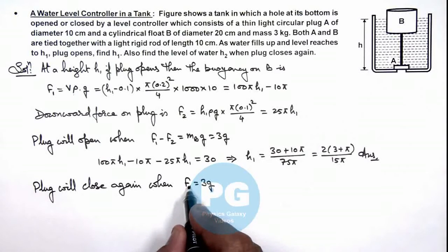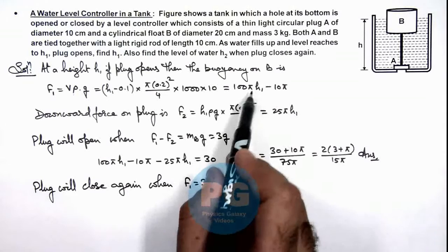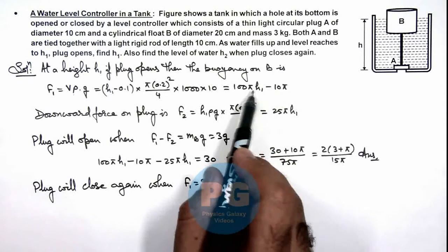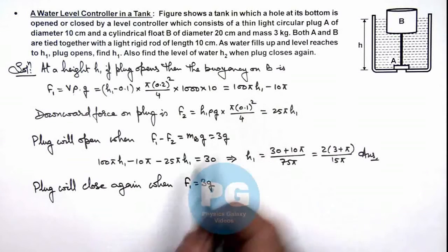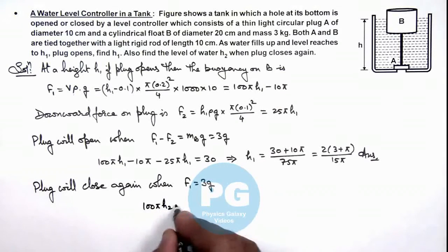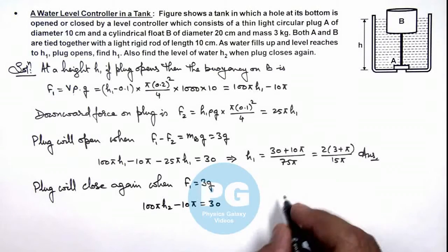So here we use another force. Numerically we can substitute but we change the value of h₁ to h₂. This gives us 100π h₂ minus 10π equals 30.